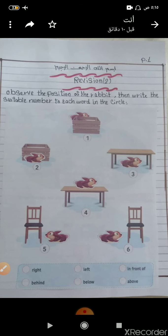Picture number four, where is the rabbit? The rabbit is above the table. So here at above, we write number four.